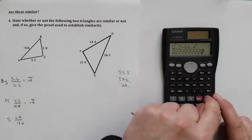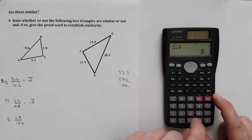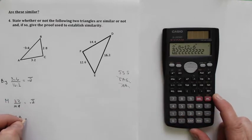And 2.8 divided by 12.6 gives me a scale factor of, you guessed it, 0.2 repeating.